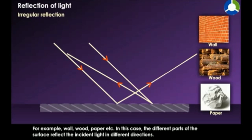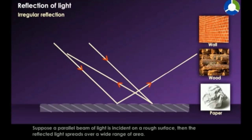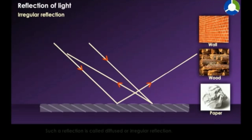When light falls on a rough surface, it is reflected irregularly. This kind of reflection is known as diffuse reflection. This is because it is a rough surface.